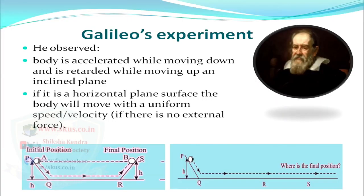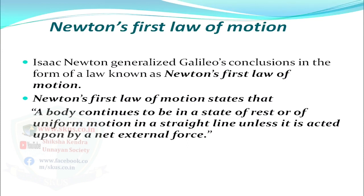To study the motion of objects and the relation between force and motion, Galileo conducted an experiment. He observed that a body is accelerated while moving down and retarded while moving up an inclined plane, as you can see in the first figure. If it is a horizontal plane surface, the body will move with uniform velocity if there is no external force, as you can see in the second figure. Isaac Newton generalized Galileo's conclusion as Newton's first law of motion: a body continues to be in a state of rest or of uniform motion in a straight line unless it is acted upon by a net external force.